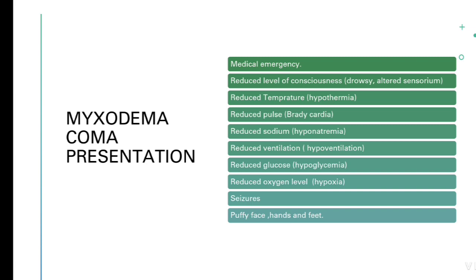How does it present? You can remember it like everything is reduced: reduced level of consciousness — patient presents with drowsy or altered sensorium; reduced temperature means hypothermia; reduced pulse means bradycardia; reduced sodium means hyponatremia; reduced ventilation; reduced glucose means hypoglycemia; reduced oxygen level means hypoxia. Patient can also present with seizures because of hyponatremia. Patient presents with puffy face, puffy hands and feet.